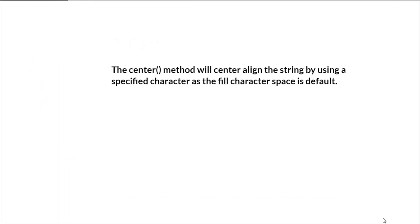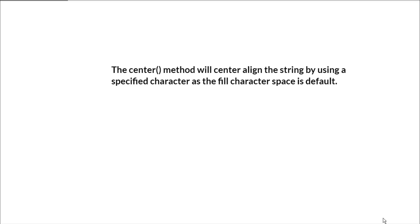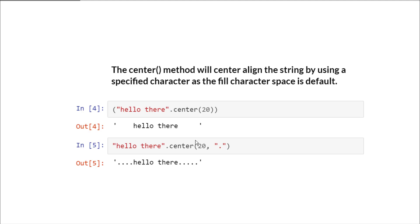Next is the center method. The center method will center-align the string by using the specified character as the fill character — space is the default. For example, in this string 'hello there', we have centered it and the total length should be 20. If we calculate the length of this output, it is 20. And if we specify the fill character as a period, it will just fill the spaces with that fill character.